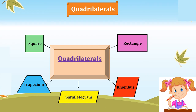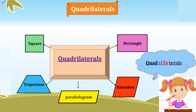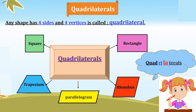Now let's move to quadrilaterals. Quadrilaterals — any shape that has four sides and four vertices is called a quadrilateral. Examples include square, rectangle, trapezium, parallelogram, and rhombus. Parallelogram is our new shape this year.